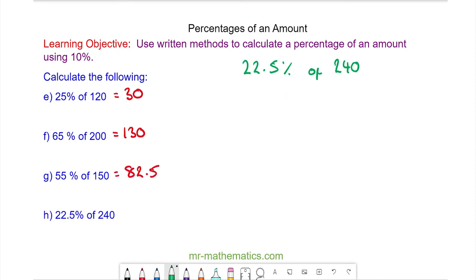For question h we can work out 22.5% by working out 20% and 2.5% and adding these together. We know 10% will be equal to 24. So 20% will be 48. To work out 2.5% we know 5% is 12. So 2.5% will be equal to 6. And we can add the 48 and the 6 together and we get 54.